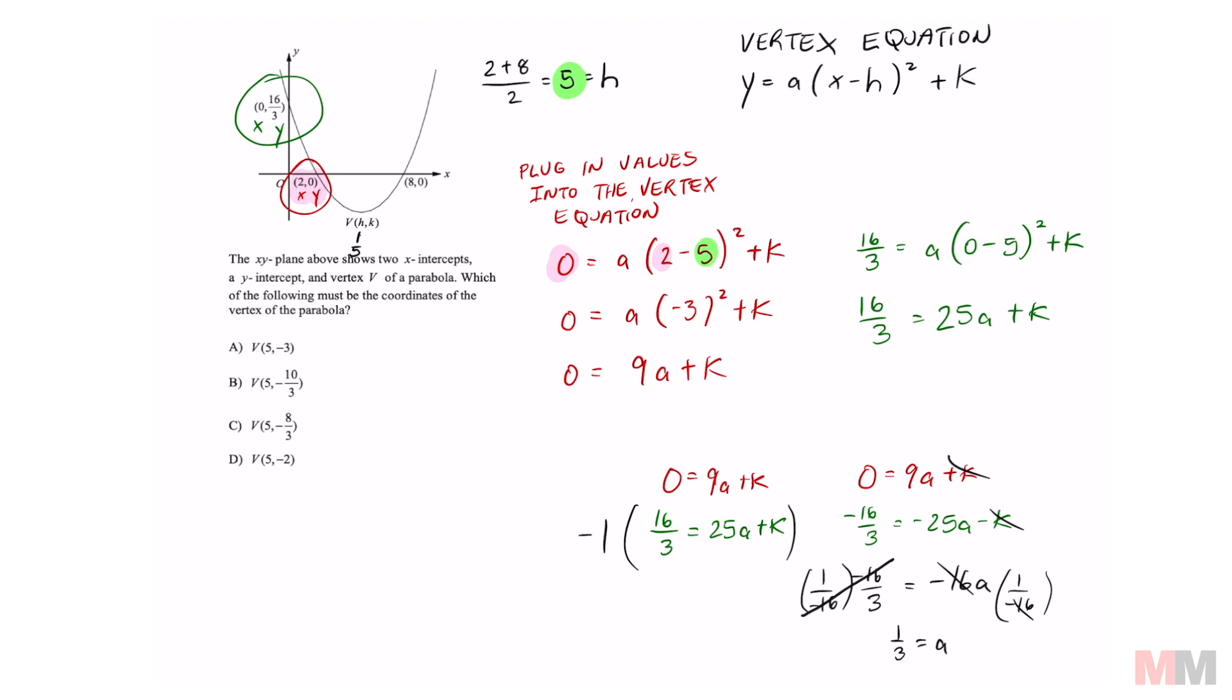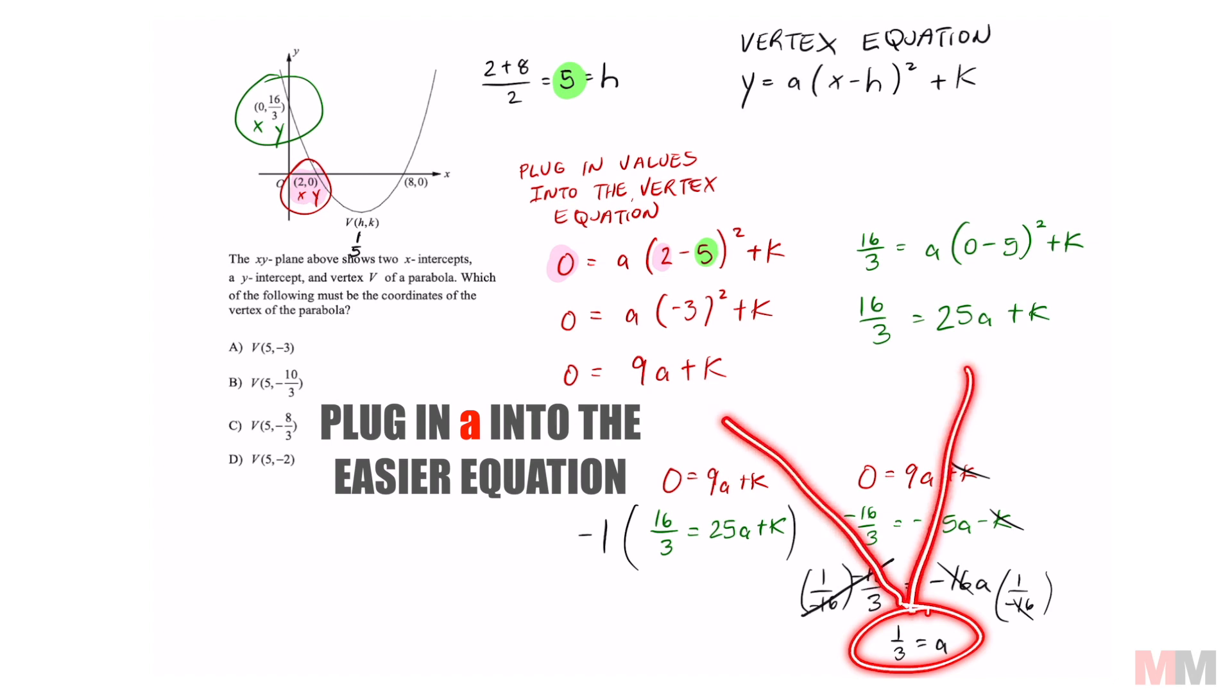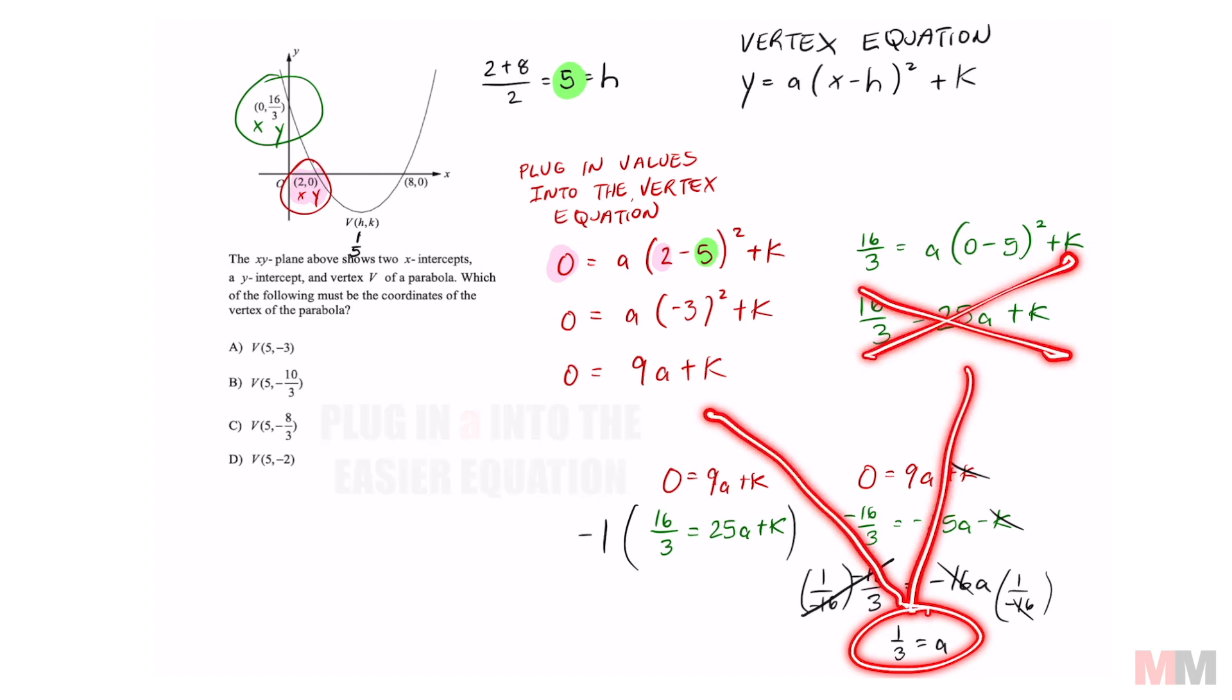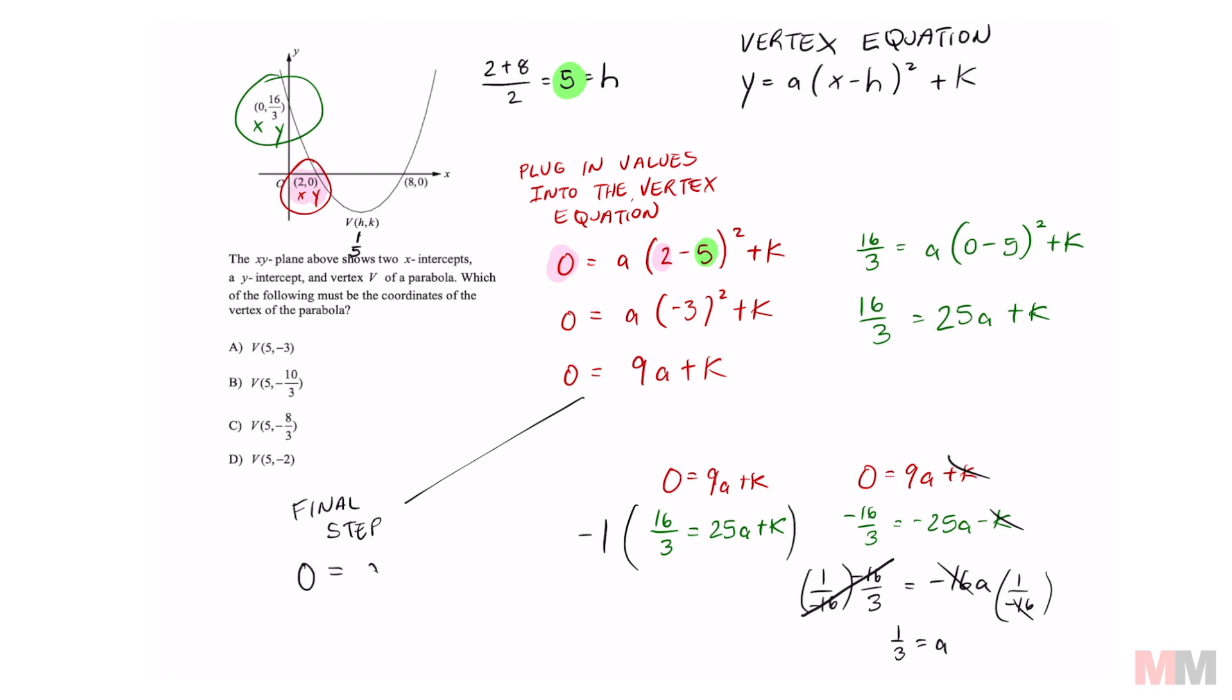We are almost done I promise you. Now all we have to do is plug this in into one of these two equations to get k. I'm going to avoid the fraction one. So that's going to be 0 equals 9 times 1 third because that's my a value and solve for k. 3 plus k equals 0, k equals negative 3, which means that my answer choice is A.